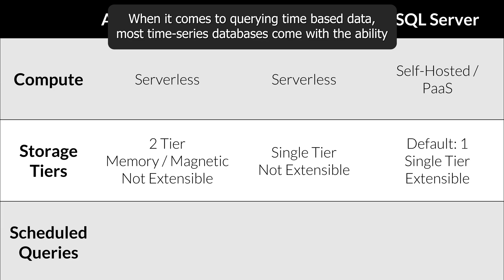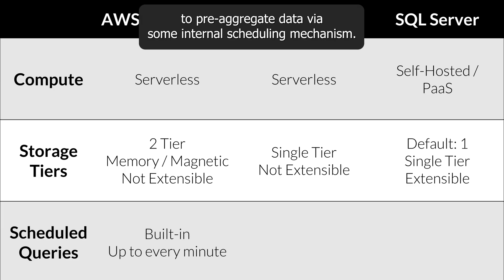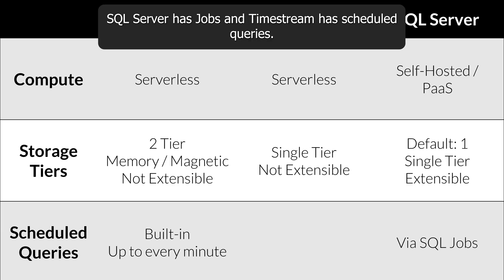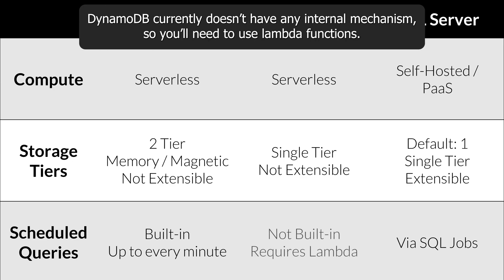When it comes to querying time-based data, most time series databases come with the ability to pre-aggregate data via some sort of internal scheduling mechanism. SQL Server has jobs, and Timestream has scheduled queries. DynamoDB currently doesn't have any internal mechanism, so you'll need to use Lambda functions.